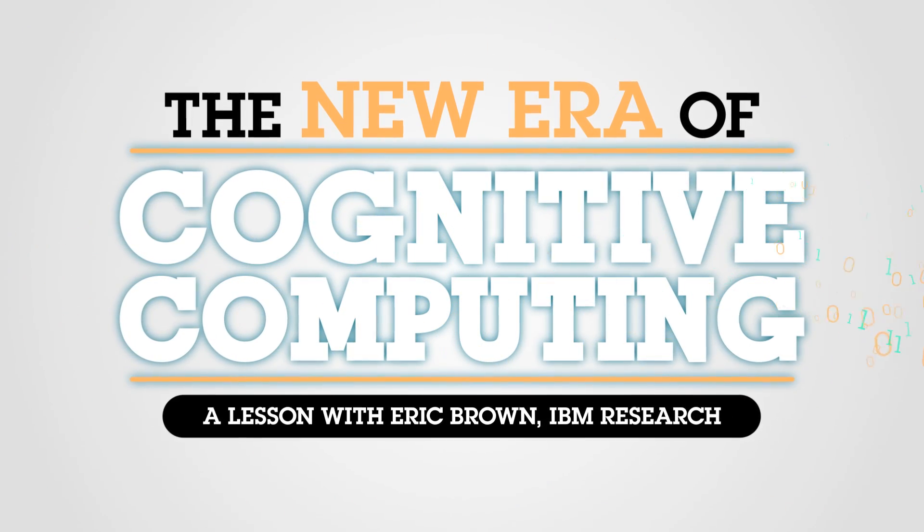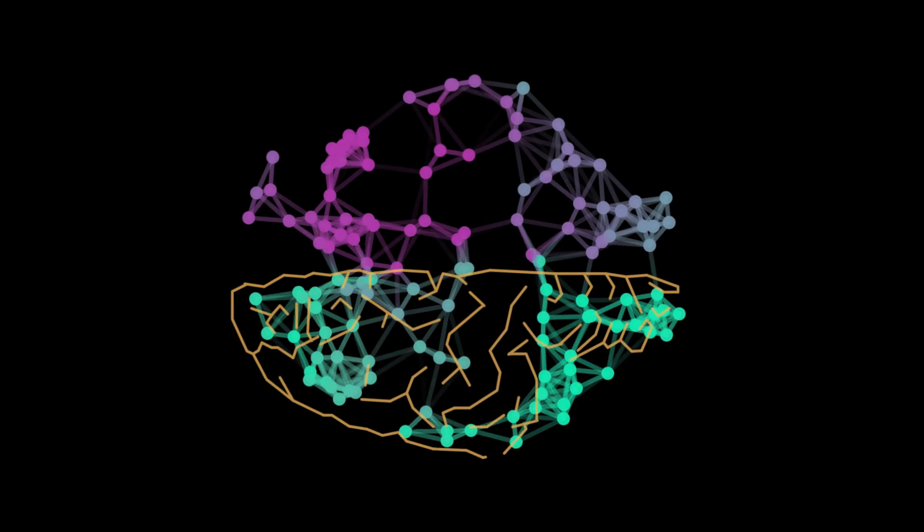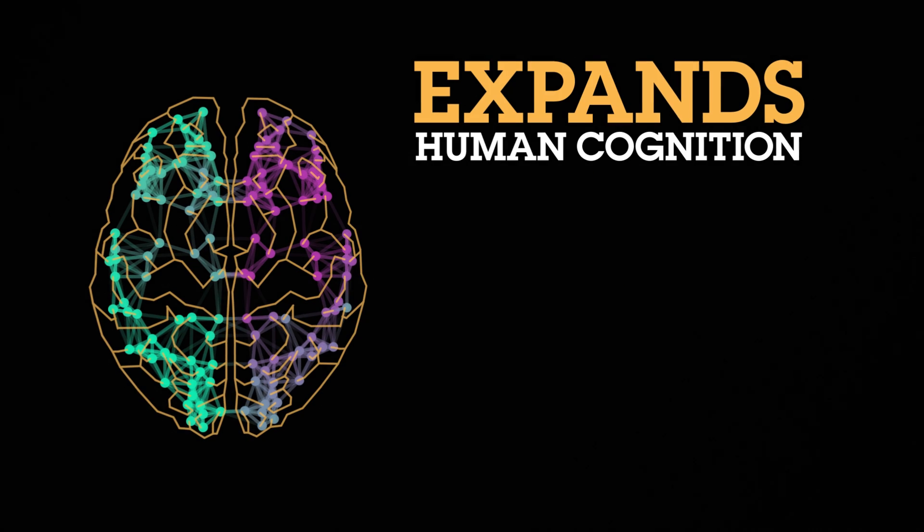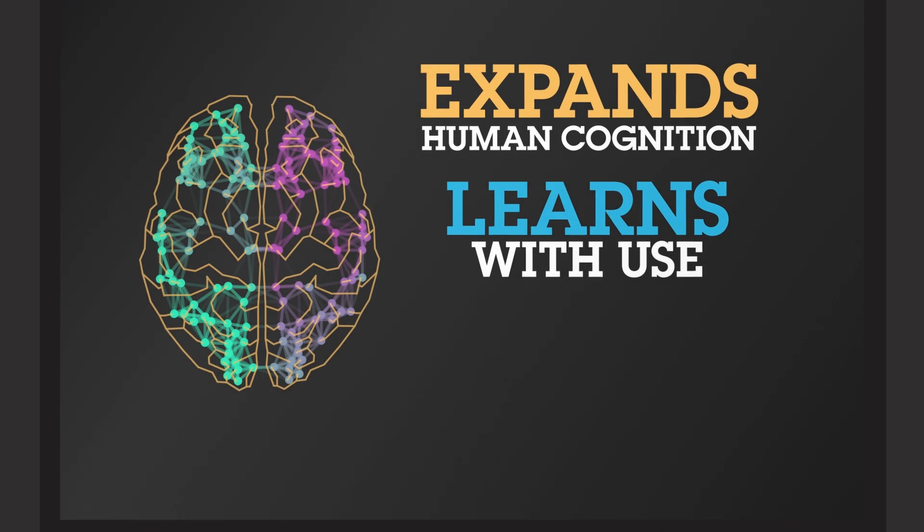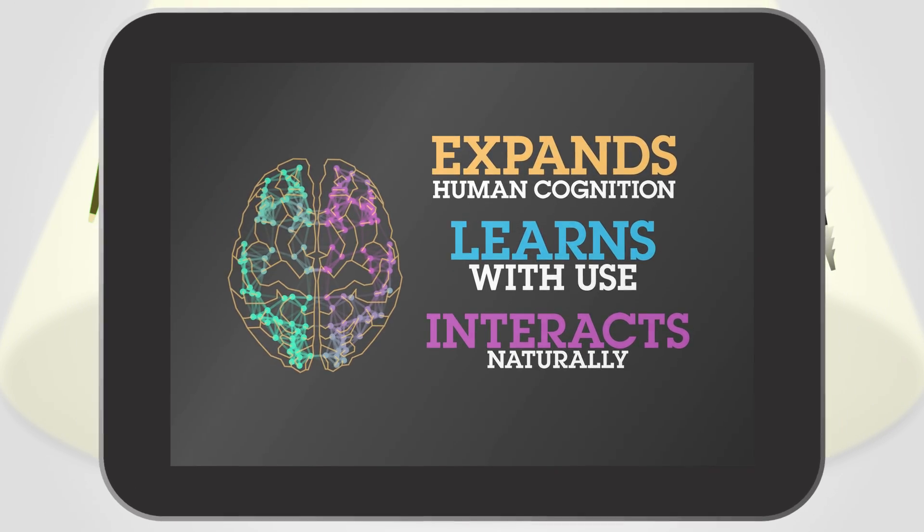At IBM, we're seeing a new era of computing, starting with the tabulating era, then to the programmable computer era, and now cognitive computing systems, which expand the boundaries of human cognition, become smarter with use, and have a much more natural interaction between the human and the computer.